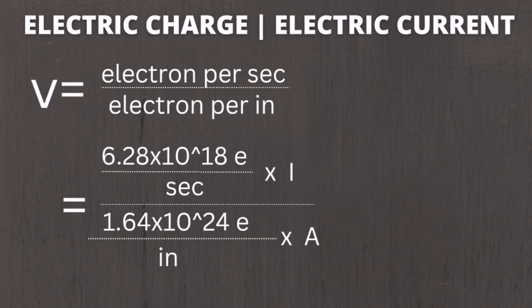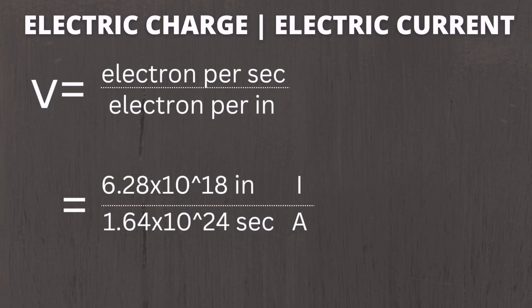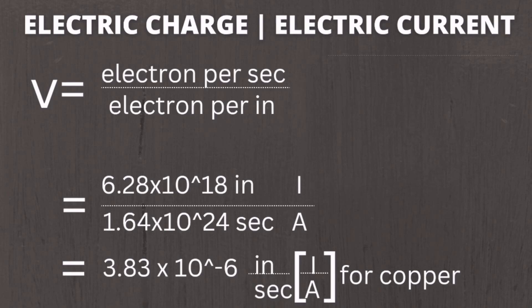Combining the two, the electron velocity formula becomes: 6.28 times 10 raised to 18 electrons per second times I, divided by 1.64 times 10 raised to 24 electrons per inch times area A. The electrons cancel, giving 3.83 times 10 raised to negative 6 times (I divided by A), where I over A is the current density delta. So electron velocity equals 3.83 times 10 raised to negative 6 times delta. Note this formula applies only to copper conductors.